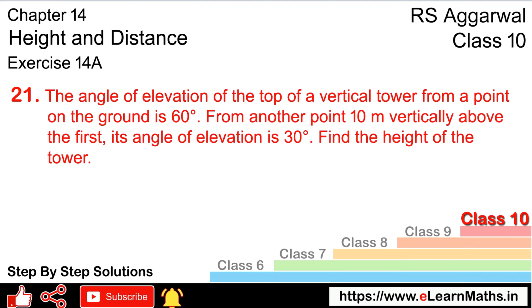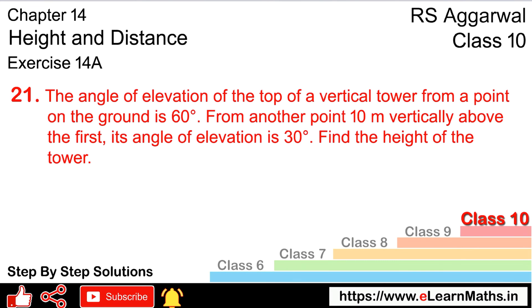Let's do question number 21 of exercise 14a — height and distance. Question number 21: the angle of elevation of the top of a vertical tower from a point on the ground is 60 degrees. From another point 10 meters vertically above the first, its angle of elevation is 30 degrees.